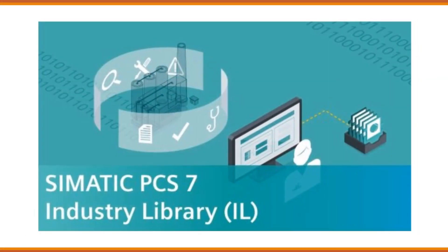Industrial Library. The industrial library is a collection of software components, function blocks, and templates designed to support various industrial automation tasks. It offers a wide range of pre-configured functionalities and modules that can be used in process control, data acquisition, communication, and other automation-related tasks.